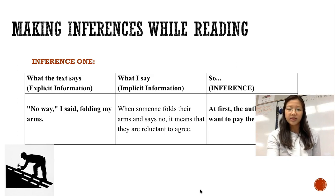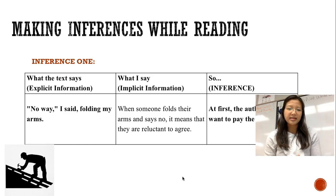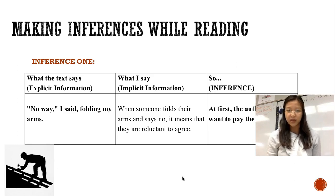The first inference is: at first the author did not want to pay the extra thousand dollars. The explicit quote from the text is: 'No way,' I said, holding my arms.' When we see someone holding their arms and shaking their head saying no, it usually means that person is reluctant to agree. By combining the explicit and implicit information, we come to the inference that at first the author did not want to pay the extra thousand dollars.